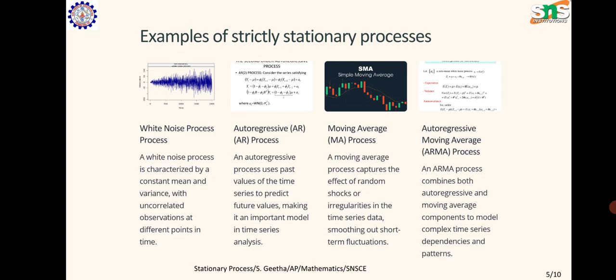Examples of strictly stationary processes. White noise process: characterized by constant mean and variance with uncorrelated observations at different points in time. Autoregressive (AR) process: uses past values of the time series to predict future values, making it an important model in time series analysis. Moving average (MA) process: captures the effect of random shocks or irregularities in the time series data, smoothing out short term fluctuations. Autoregressive moving average (ARMA) process: combines both autoregressive and moving average components to model complex time series dependencies and patterns.